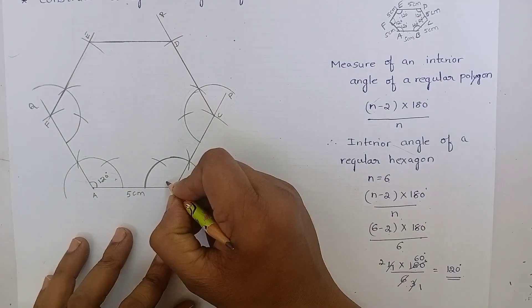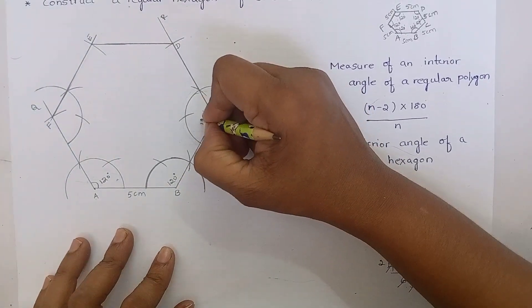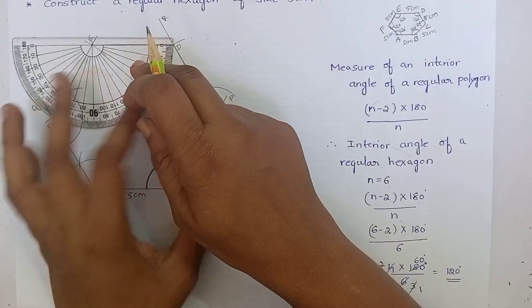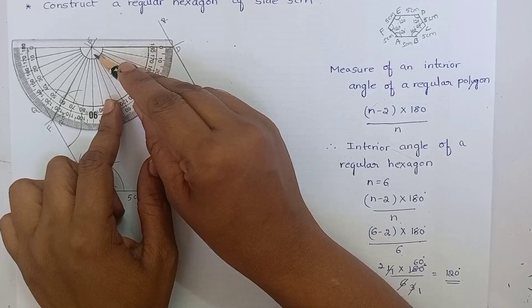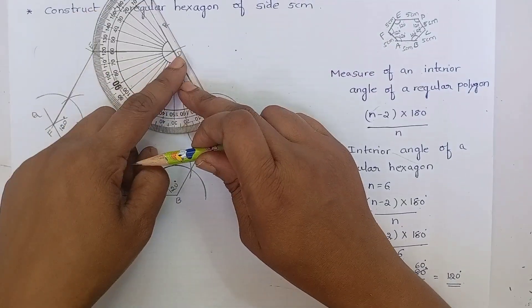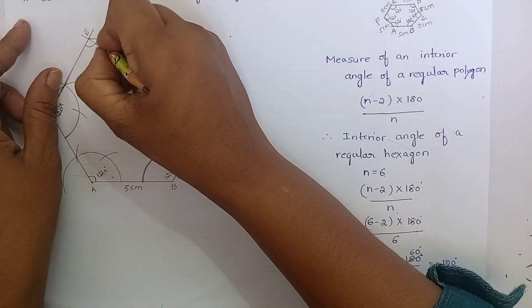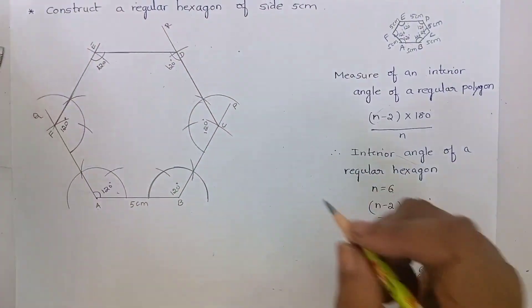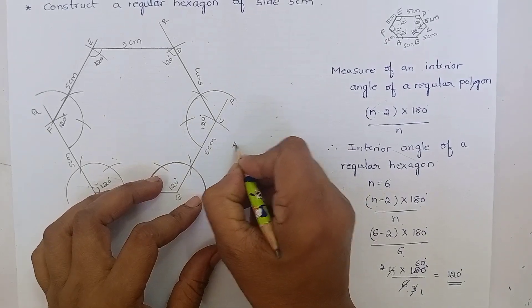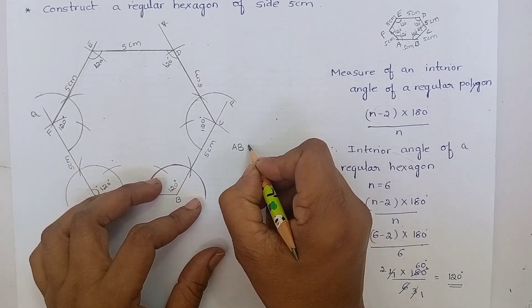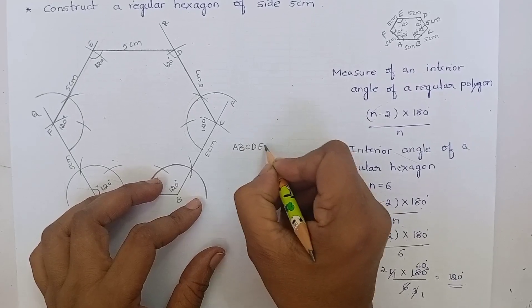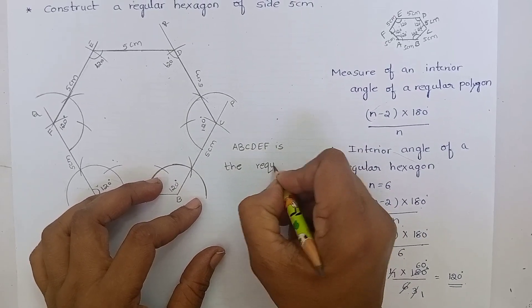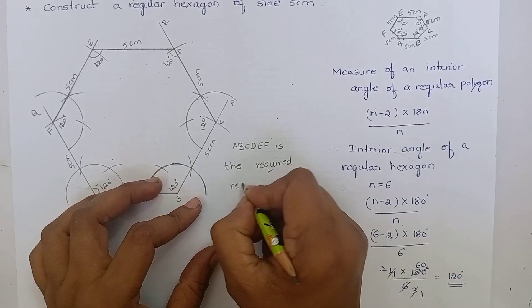We know that angle B measures 120 degrees, angle A measures 120 degrees, and angle C measures 120 degrees. Angle E also measures 120 degrees, and angle D also measures 120 degrees. ABCDEF is the required regular hexagon.